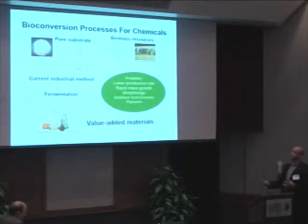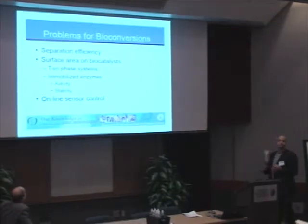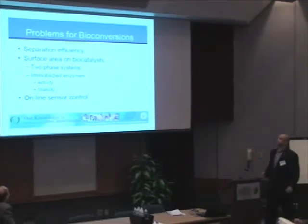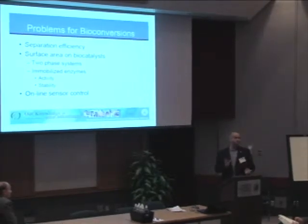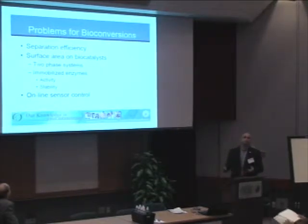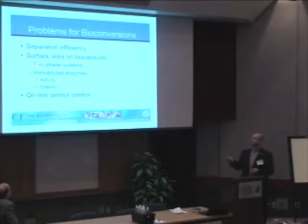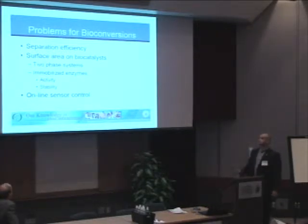Morphology inhibitors from biomass pigments add a lot of complications, and those inhibitors become very important. On the application side, bioconversion requires us to work on separation efficiency — we need to learn how to sort different molecules. For biocatalysis, we can't just have free-floating enzymes in solution; it gets too hard to separate things. For fuels, which are hydrophobic and don't want to be in water, we end up with two-phase systems.